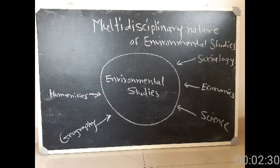The disciplines related to environmental studies include Bhootik Shastra (Physics), Electronics, Abhiyantrikiya (Engineering), Jeeva Shastra (Biology), Jeeva Rasan Shastra (Biochemistry), Vanspatiya (Botany), Pranish Shastra (Zoology), Bhuvidnan (Geology), Prakotik Bhugol (Physical Geography), Sagarf Shastra (Oceanography), Havaman Shastra (Meteorology), and others.